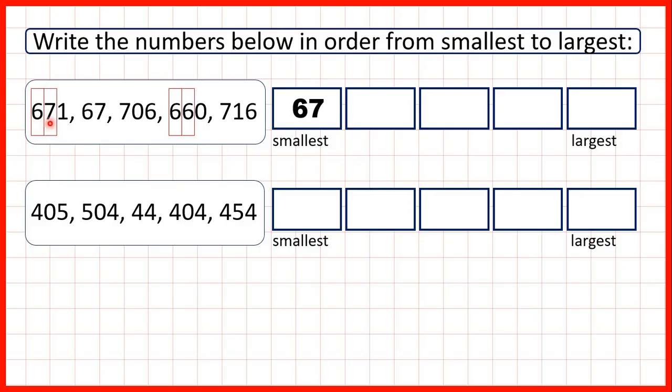We need to look across at our tens digit. Here we have seven tens, but here we only have six tens. So 660 is our next smallest number, and then we have 671.